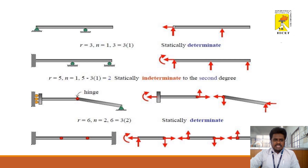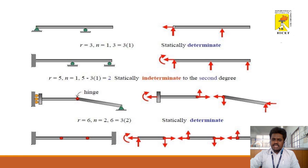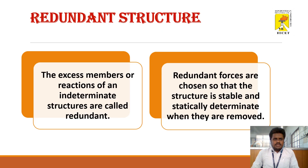In the third example, the support condition is a fixed with roller support at one end, a hinged support in the middle, and a hinged support at the other end. The fixed-roller gives two reactions, each hinge gives two reactions, giving r = 6 total. There are two beams, so n = 2. Applying the formula: 6 equals 3 into 2, confirming it is a statically determinate structure.